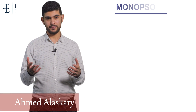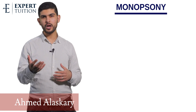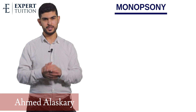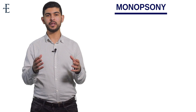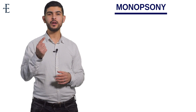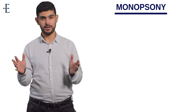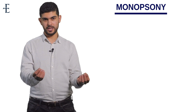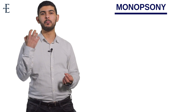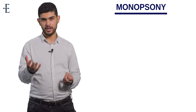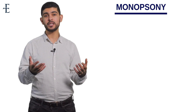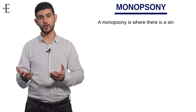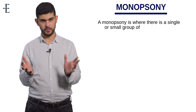Today we're going to cover monopsony. The word sounds like monopoly, and you know that a monopoly is where there is one powerful seller. A monopsony, therefore, is where there is a powerful buyer. A good definition is: a monopsony is where there is one or a group of powerful buyers.